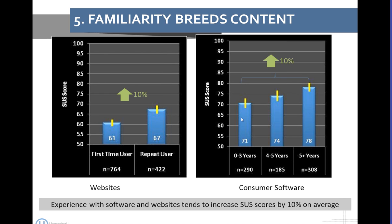One consequence of measuring experiences is that familiarity breeds content: the more experienced participants are with the website or software, the more the score tends to be inflated. We looked at one variable across websites and software: first-time users' average SUS scores across 764 people was about 61, but for participants who had actually been to the site before, their SUS score was about 10% higher. We see a similar pattern with software — the more years of experience, the more inflation in the SUS score, with a difference of about 10% between those with five years of experience versus zero to three years.